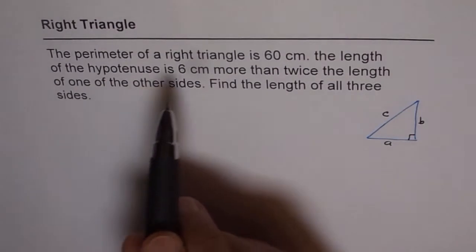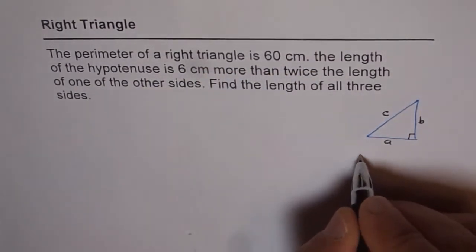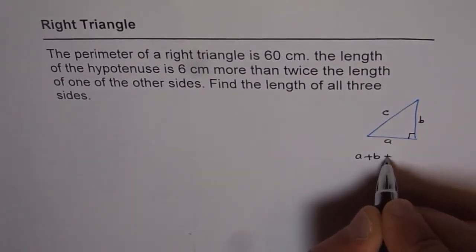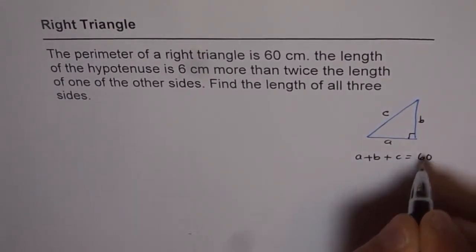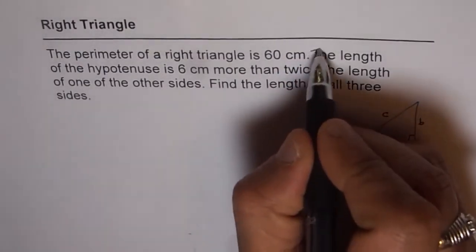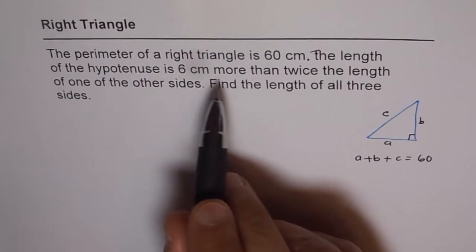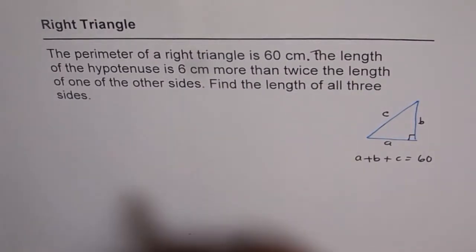Now the question is, perimeter of the right triangle is 60 cm. That means a plus b plus c equals 60 cm.